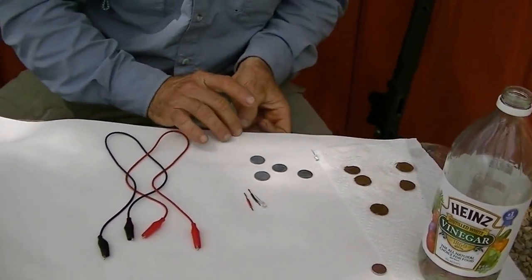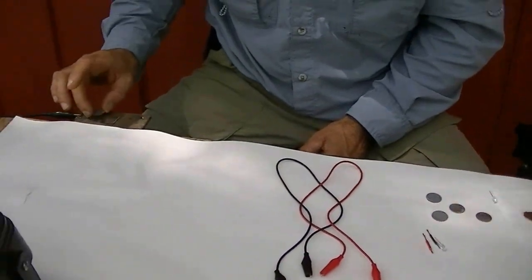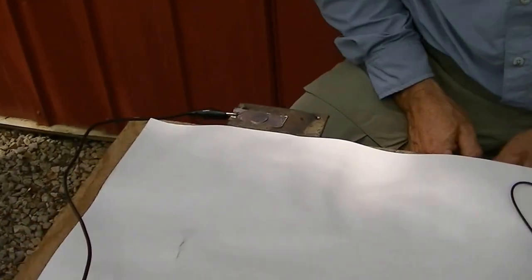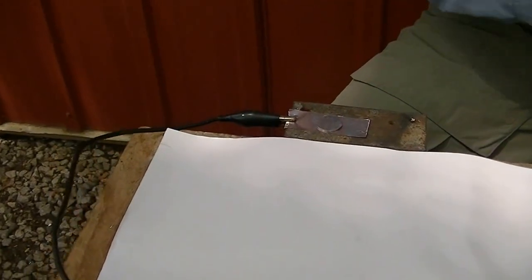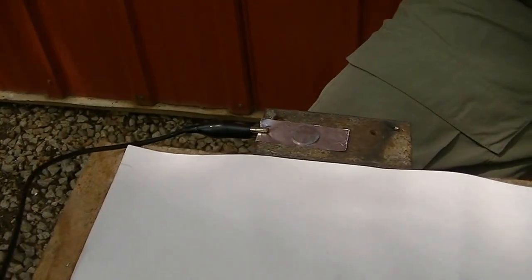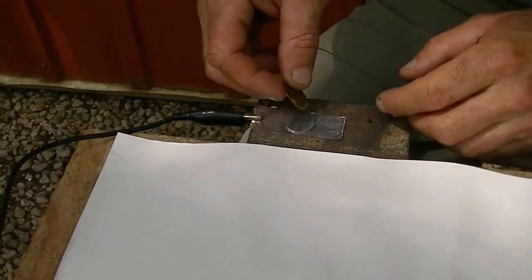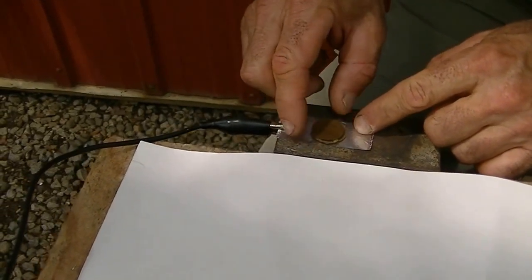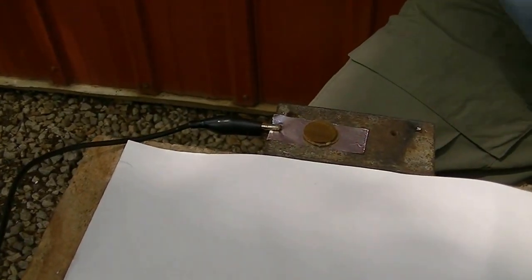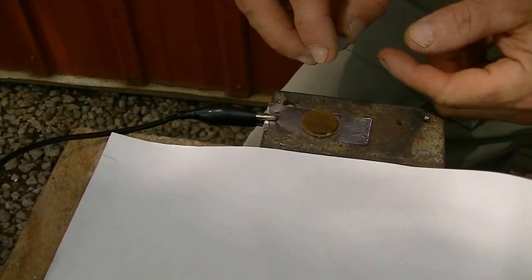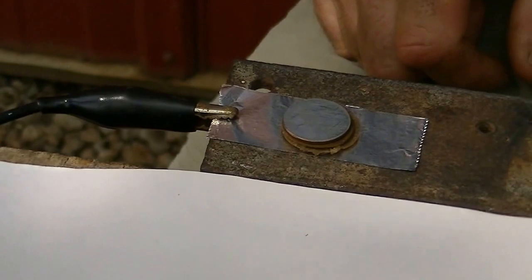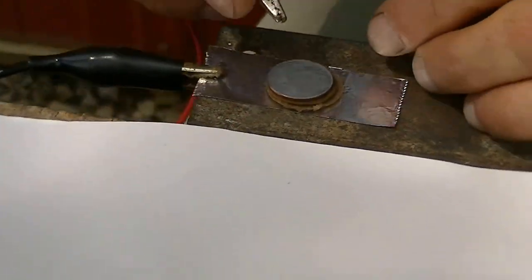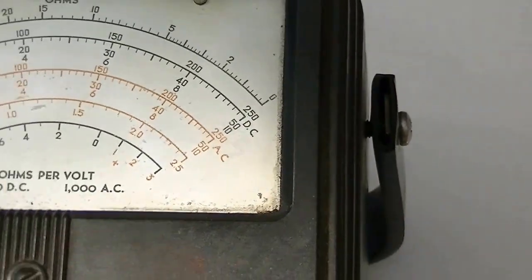What we'll do is take the penny copper side down. That will be negative. I'm putting it on a piece of aluminum. I got it hooked to my meter. We'll take a piece of the slightly damp cardboard. Again copper side down and the zinc side up. And we'll put our meter on it and it should be a little over a half a volt.